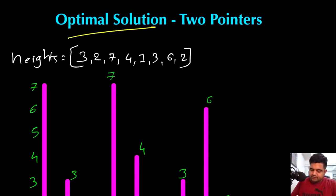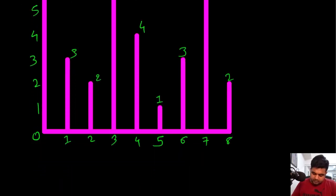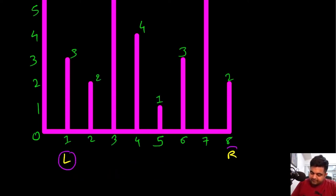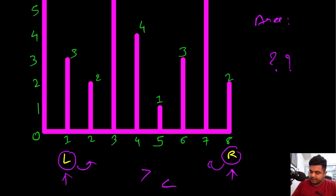For the optimal solution, we use two pointers. A left pointer starts at the first position and a right pointer starts at the last position. Both pointers move toward each other until they meet or cross. At each step, we calculate the area of the current container, then compare the heights at left and right — we keep the greater height and move the pointer on the shorter side inward.